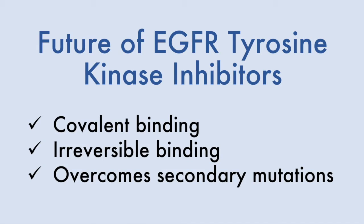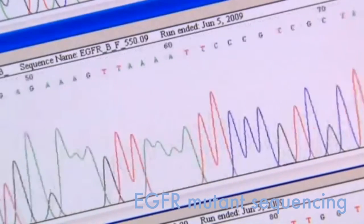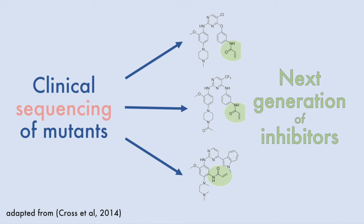The future of EGFR inhibitors lies in the development of compounds that bind covalently and irreversibly to mutant EGFR, thereby removing the dependence on inhibition kinetics. The FDA approved one of these in the United States on November 13th of this year. In the near future, scientists aim to combat these acquired resistance mutations by coupling tumor sequence analysis with new mutant-specific inhibitors, leading lung cancer treatment toward the realm of personalized medicine.